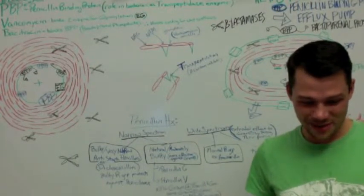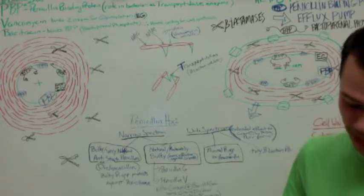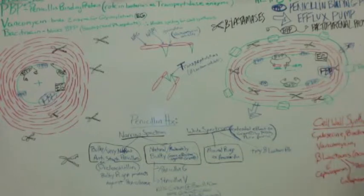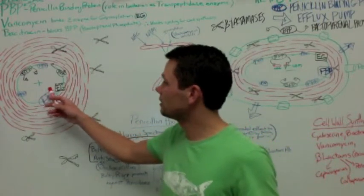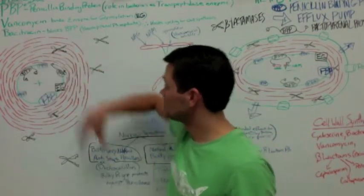All right, today we're going to be talking about cell wall synthesis inhibitors as far as antibiotics go. Just to start it out, I'm going to lay out what I've drawn here, which is just a melee of information. This is a gram-positive bacteria, and the reason that I drew it as having all these red lines around it is because these are your peptidoglycan layers.